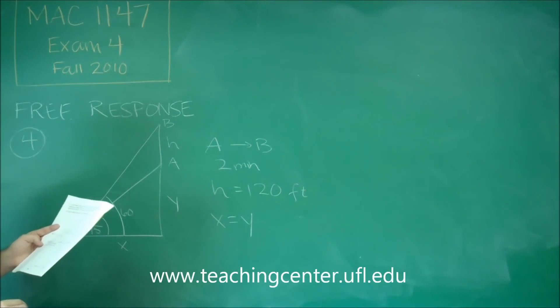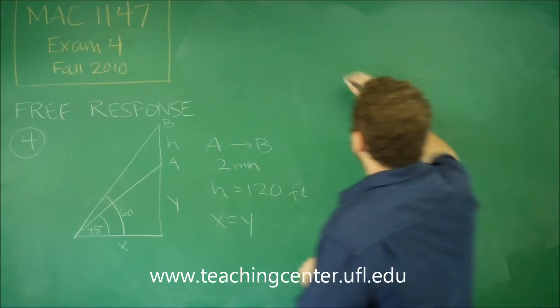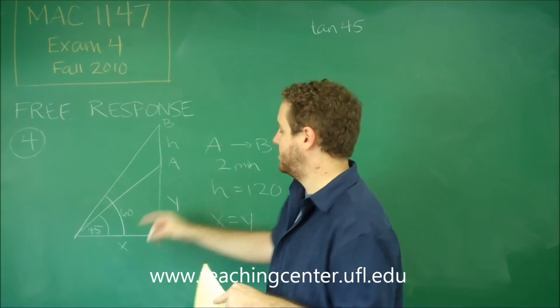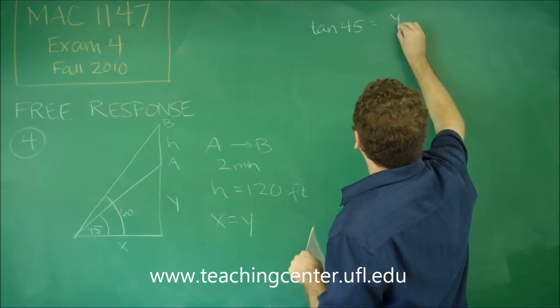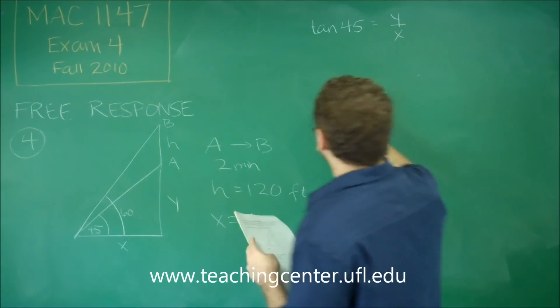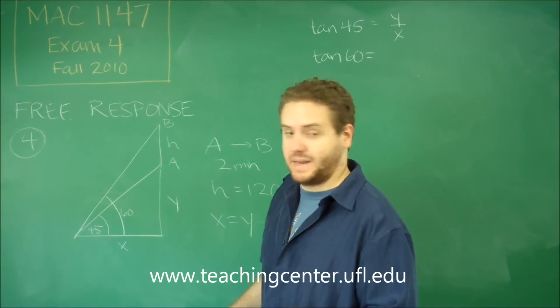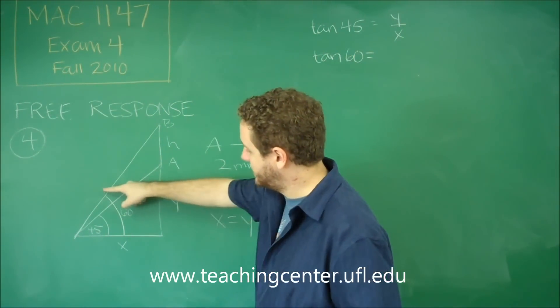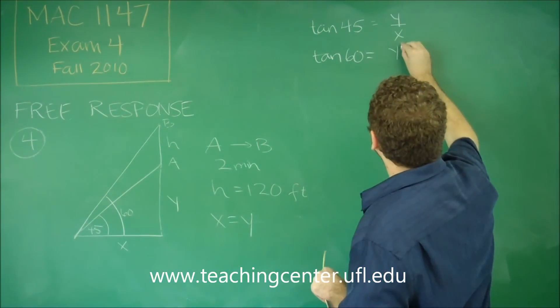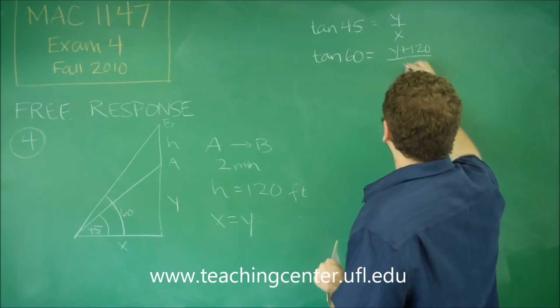So part C says write tangent 45 and tangent of 60 in terms of X and Y. Well, tan 45, tan is opposite over adjacent, we would have Y over X. Tangent 60, we have opposite over adjacent, but now our opposite is this entire side because 60 is this whole angle. So that would tell us it's Y plus 120 over X.